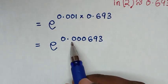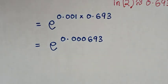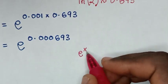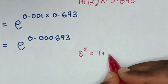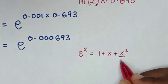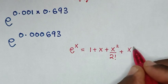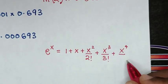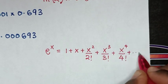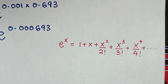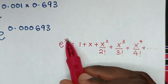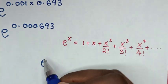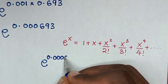This e to the power of 0.000693 — we will apply Taylor expansion. The Taylor expansion is in the form: e to the power of x is equal to 1 plus x, plus x squared over 2 factorial, plus x cubed over 3 factorial, plus x to the 4th over 4 factorial, and so on. We substitute the power x, which is 0.000693.